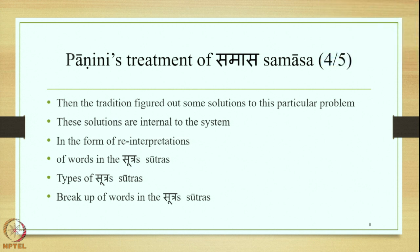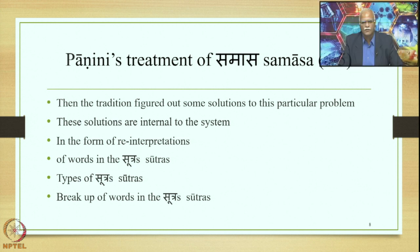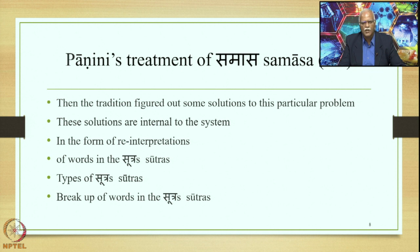The tradition figured out some solutions, primarily internal to the derivational system of Paninian grammar, in the form of reinterpretations: reinterpretations of words in the Sutras, reinterpretations of types of Sutras, and also breaking up of the words in the Sutras. These are the means resorted to by the later Paninian grammatical tradition to figure out solutions to this particular problem.